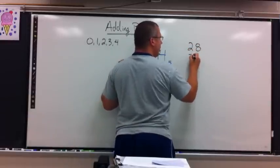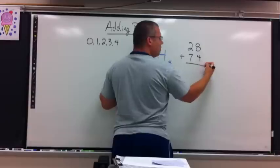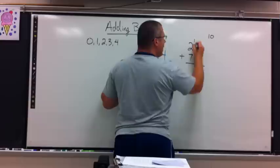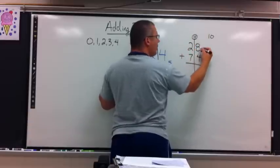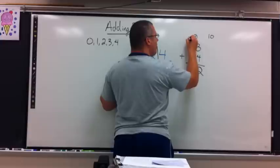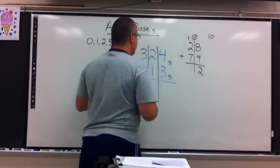For example, if I use 28 plus 74, 8 plus 4 is 12. How do I carry it? Well, it was base 10, so that's what I would carry every time. If I had a 10, that's what I would carry over. 8 plus 4 is 12. Drop the 2, carry 1 batch of 10 out of the 12 that I had. 10 was my magic number.